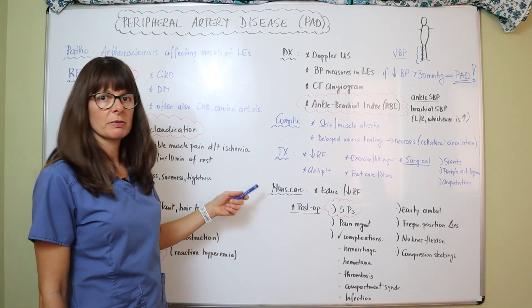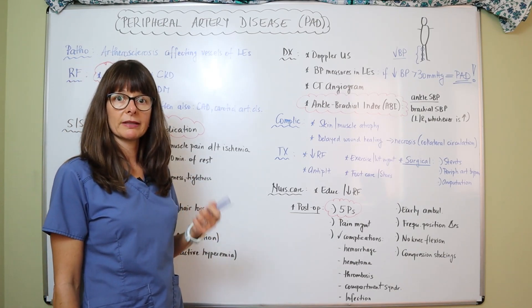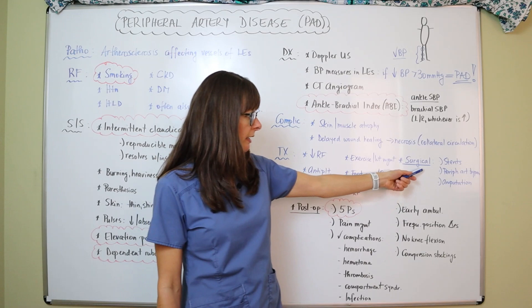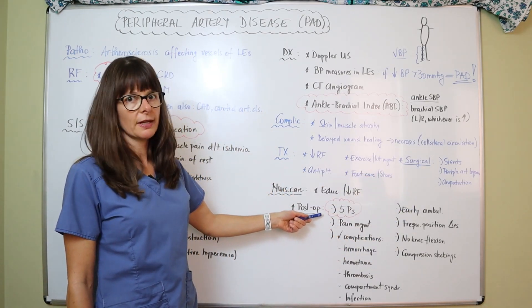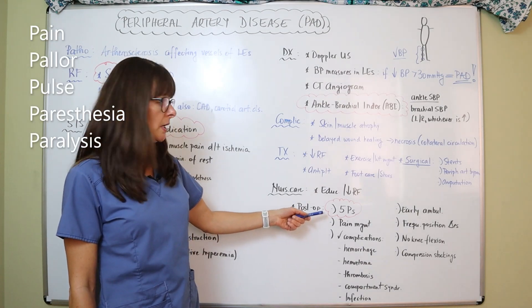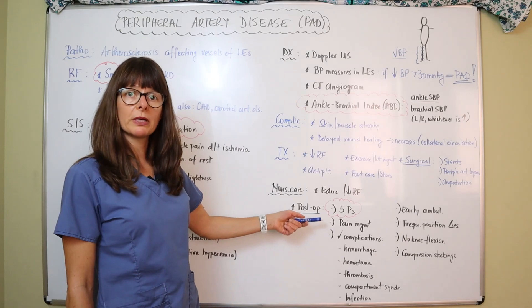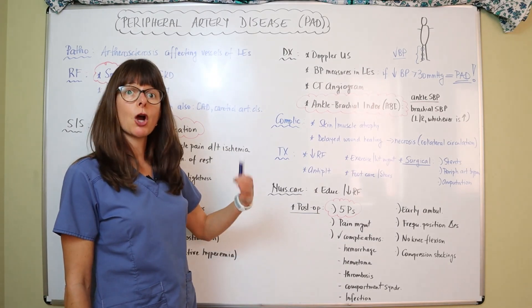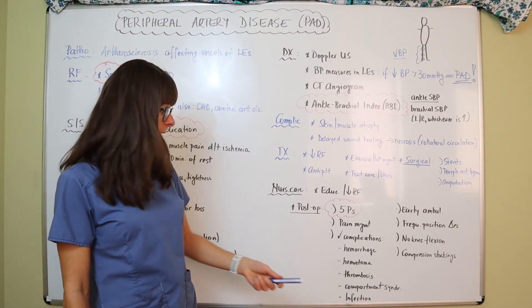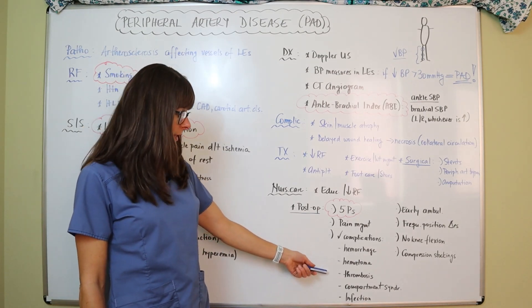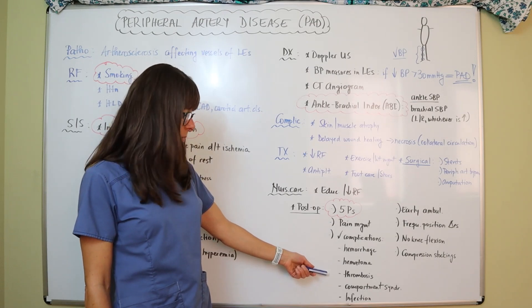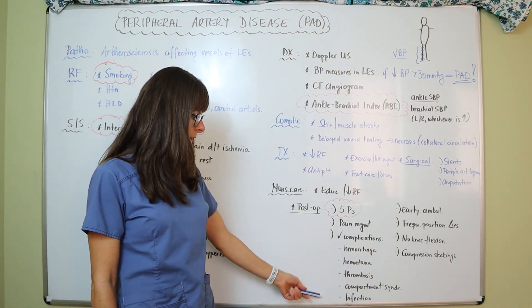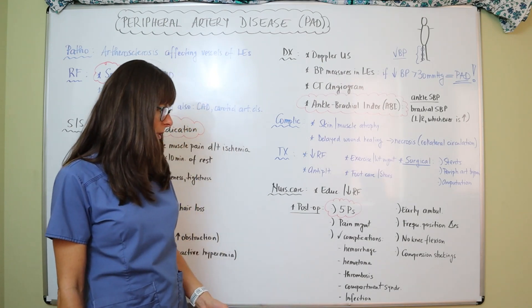For nursing care, our job is to educate patients about the disease, how it occurs, and how to decrease their risk factors. In the post-operative period, we focus on the five P's — circulation, nerve function, and movement of the lower extremities — and manage their pain while checking for complications. Since arteries have been involved, there is a risk of bleeding, hemorrhage, hematoma formation, thrombosis, compartment syndrome, or signs of infection, so we monitor closely for these post-op complications.